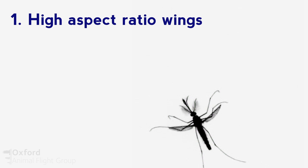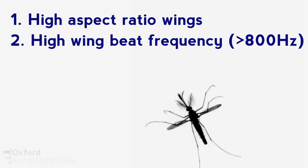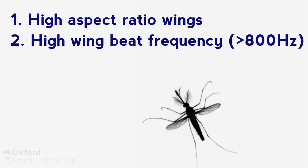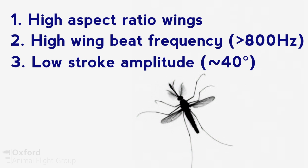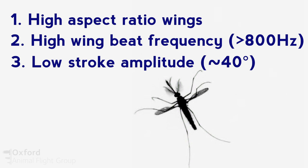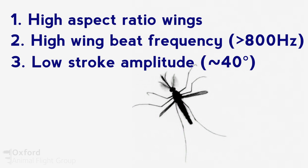They also have a really high wing beat frequency, more than double that of any other similarly sized insects. They also move their wings a really small amount—beating their wings to a tiny 40 degrees when they move back and forth, and that's really small.